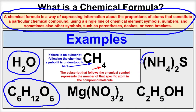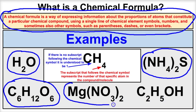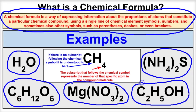If we take a look at ammonium sulfide, (NH4)2S — it's made up of two nitrogens, eight hydrogens, and one sulfur. Magnesium nitrate is made up of one magnesium atom, two nitrogen atoms, and six oxygen atoms. And last but not least, ethanol or ethyl alcohol is made up of two carbons, six hydrogens, and one oxygen atom.